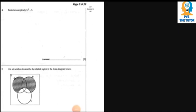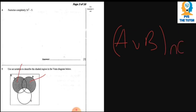Question 5 says: use set notation to describe the shaded region in the Venn diagram. Looking at what has been shaded — this part and that part — we discover it is A union B, without the inclusion of C. So C has not been included. We are saying (A ∪ B) ∩ C', because only elements in A and B are shaded, and C's complement means things not found in C.